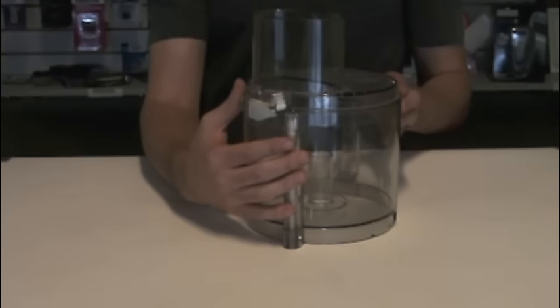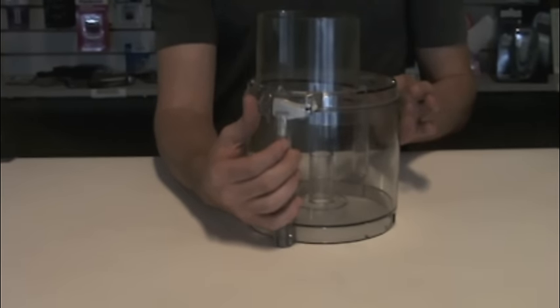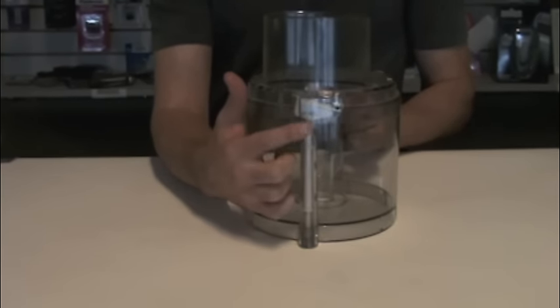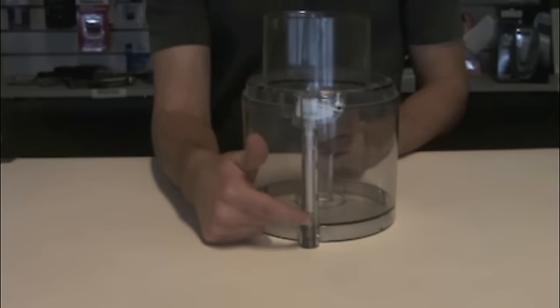You're going to place the lid onto the bowl and turn it counter-clockwise one turn so that the tab interlocks with the white pole on the bowl.